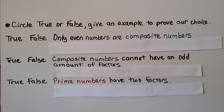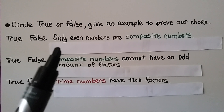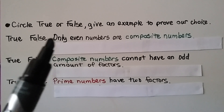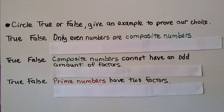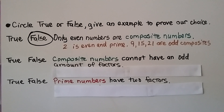True or false: only even numbers are composite numbers. Can you think of an even number that's prime, or some odd numbers that are composite? The answer is false. 2 is an even number and it's prime — its factors are only 1 and 2. And 9, 15, and 21 are odd numbers that are composites because they have more than two factors.